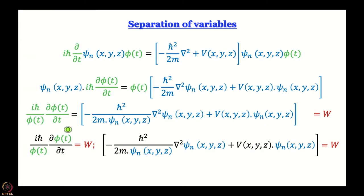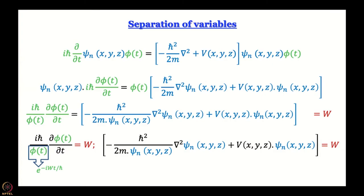It is very easy to solve the time-dependent wave equation. When you do it, the solution you get is e^(−iWt/ħ). We are not using a linear combination because we have the benefit of hindsight. What we can do at this stage is plug it back, giving us the time and space-dependent wave function expressed as ψₙ(x,y,z), the space-dependent part, multiplied by e^(−iWt/ħ).